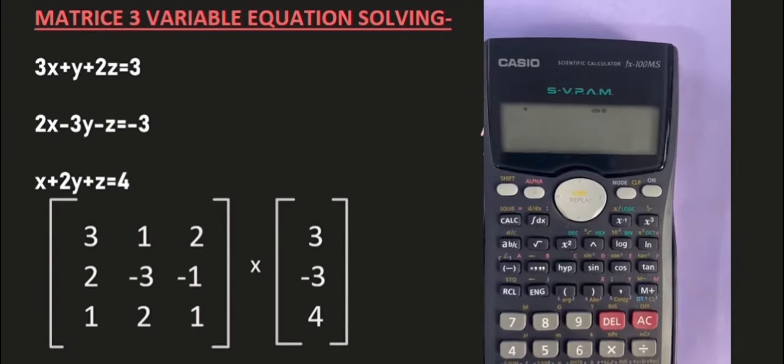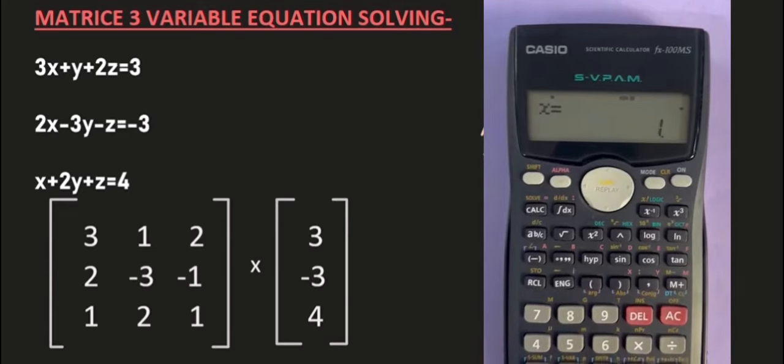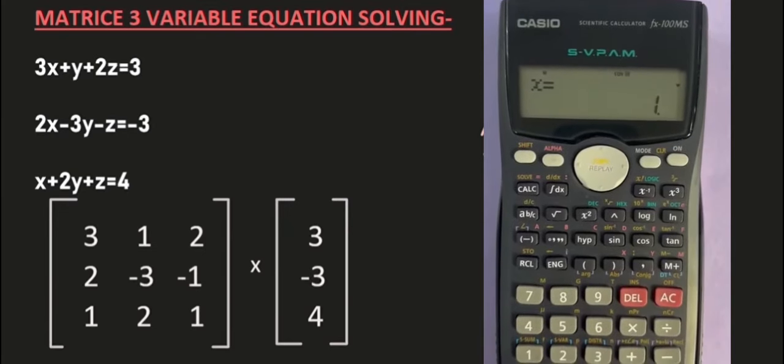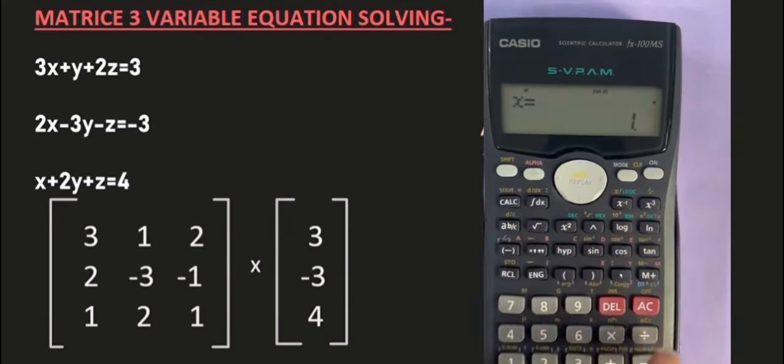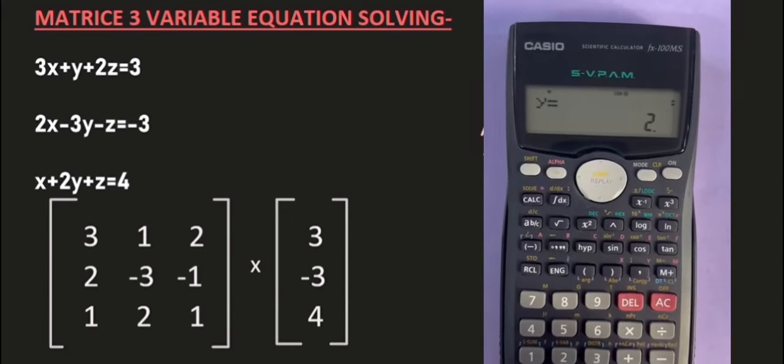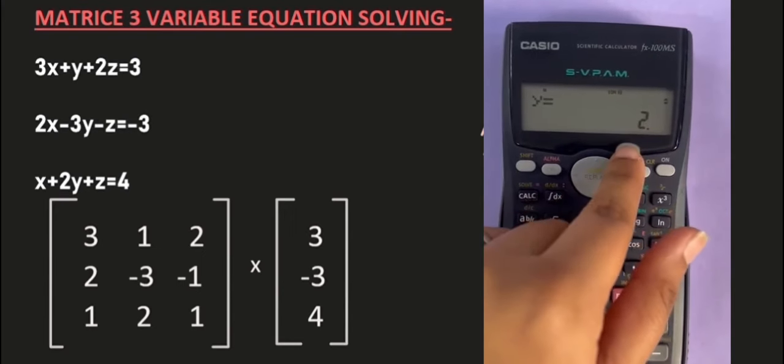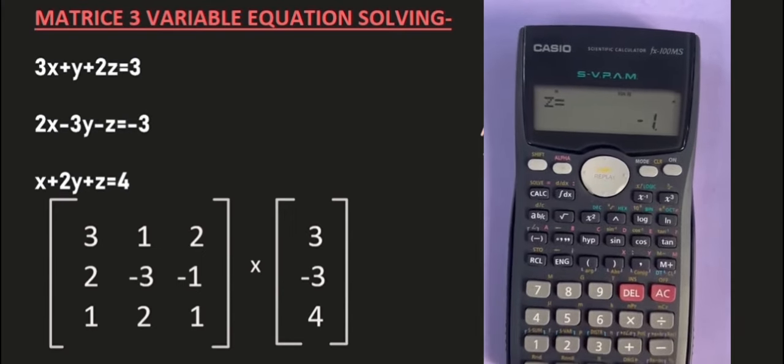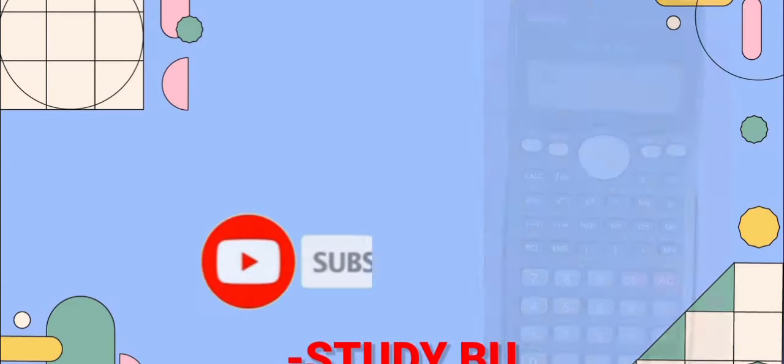And thus, we will click on the equals sign and get our results of X, Y and Z. X is equal to 1, Y is equal to 2 and Z is equal to minus 1. Thank you and keep watching.